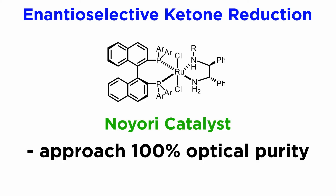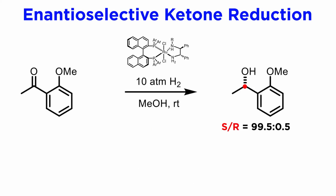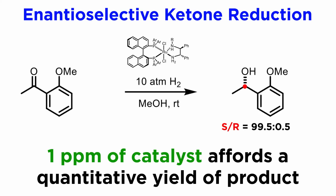A chiral diamine or substituted diamine where R is sometimes a sulfonyl group. These are truly fantastic catalysts, as they afford extremely high levels of optical purity with simple ketones, approaching 100%. In addition, they are extremely stable and can carry out up to millions of turnovers, making them eminently practical. An example of their application: just one part per million catalyst is sufficient to afford a quantitative yield of product.